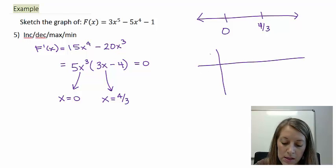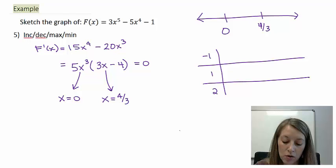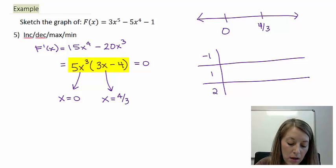So something less than 0, let me just do -1. Something between 0 and 4/3, which is 1 and 1/3, I can just do 1. And something beyond 1 and 1/3, so let me just do 2.